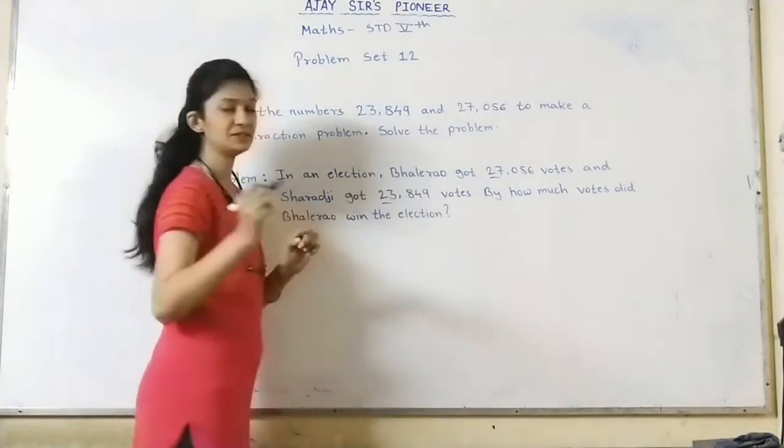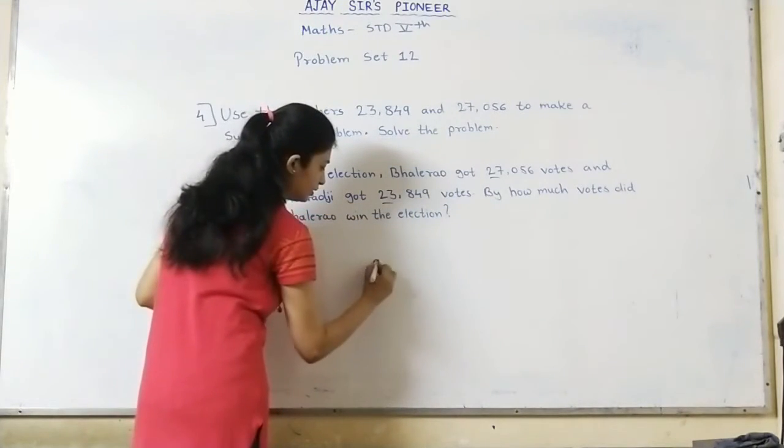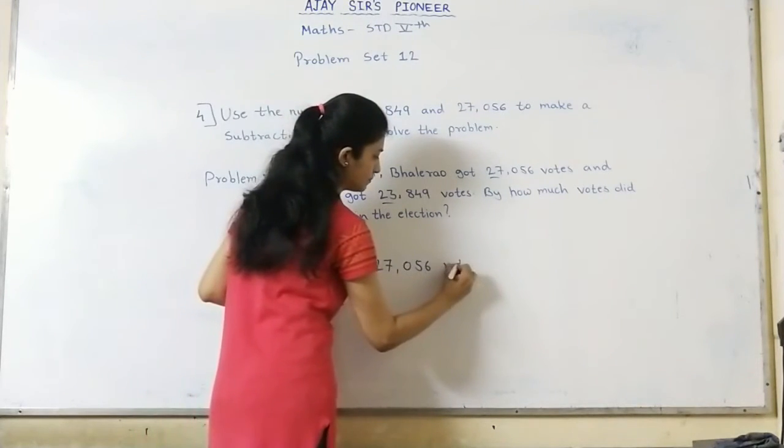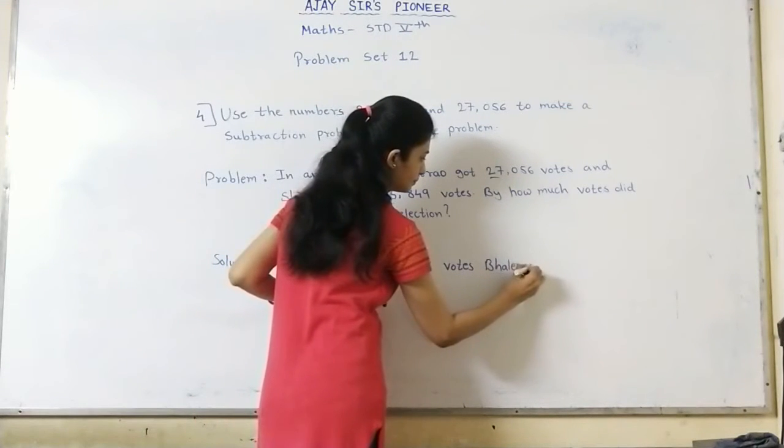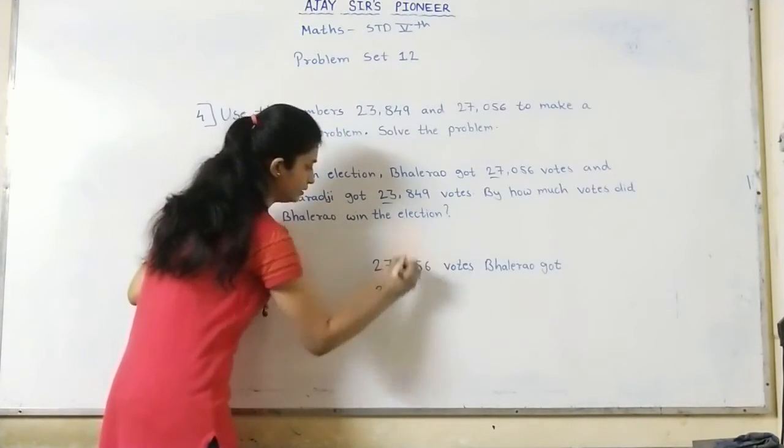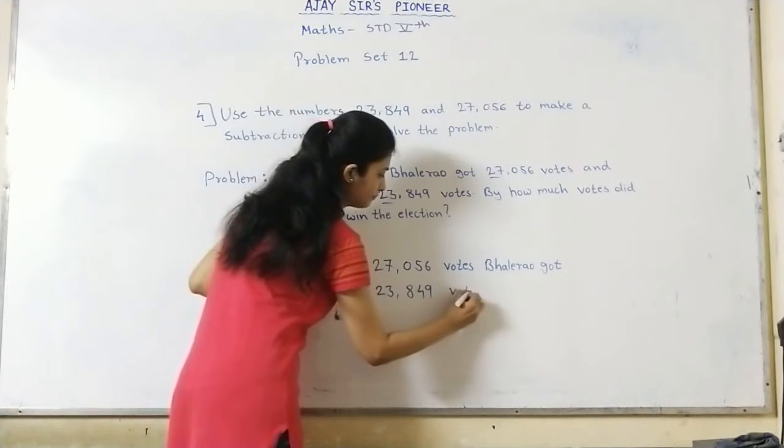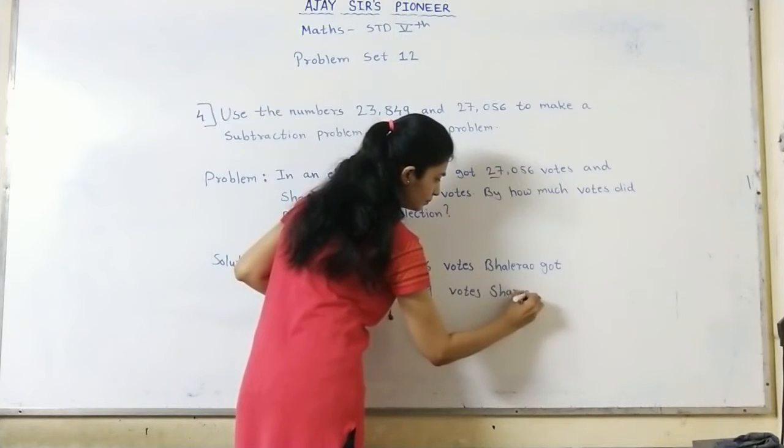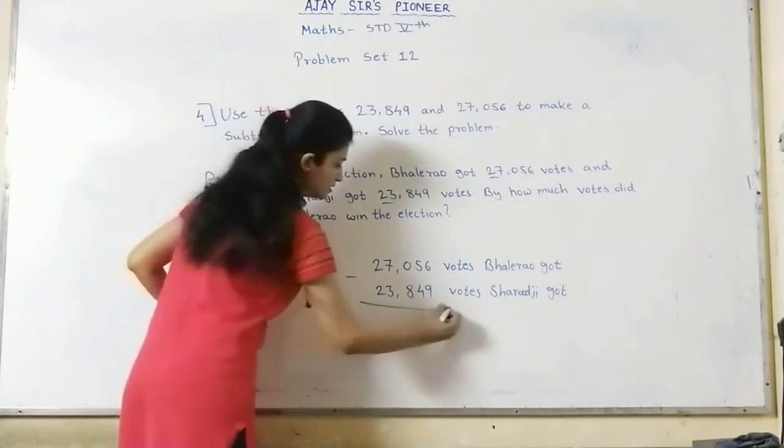Obviously, there is 23,000 and 27,000. The bigger number is 27. That means Bhalerao got 27,056 votes. Now our main question: By how much votes did Bhalerao win the election? Here we write the problem, then we will solve the solution. Always keep the bigger number first.